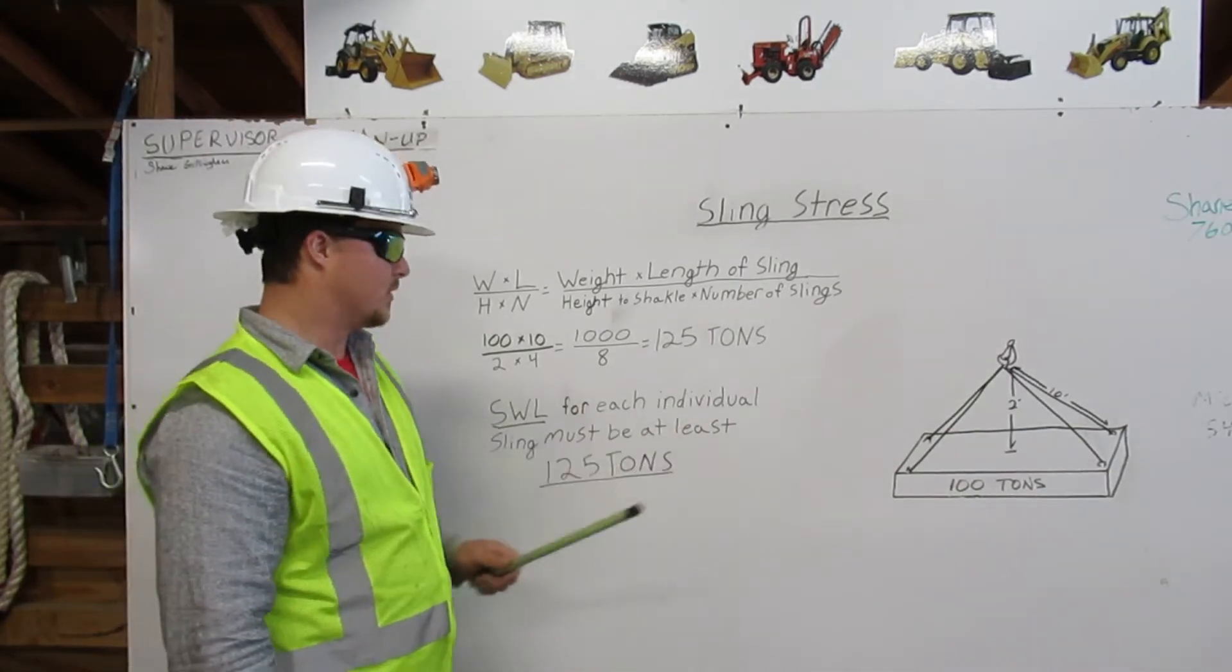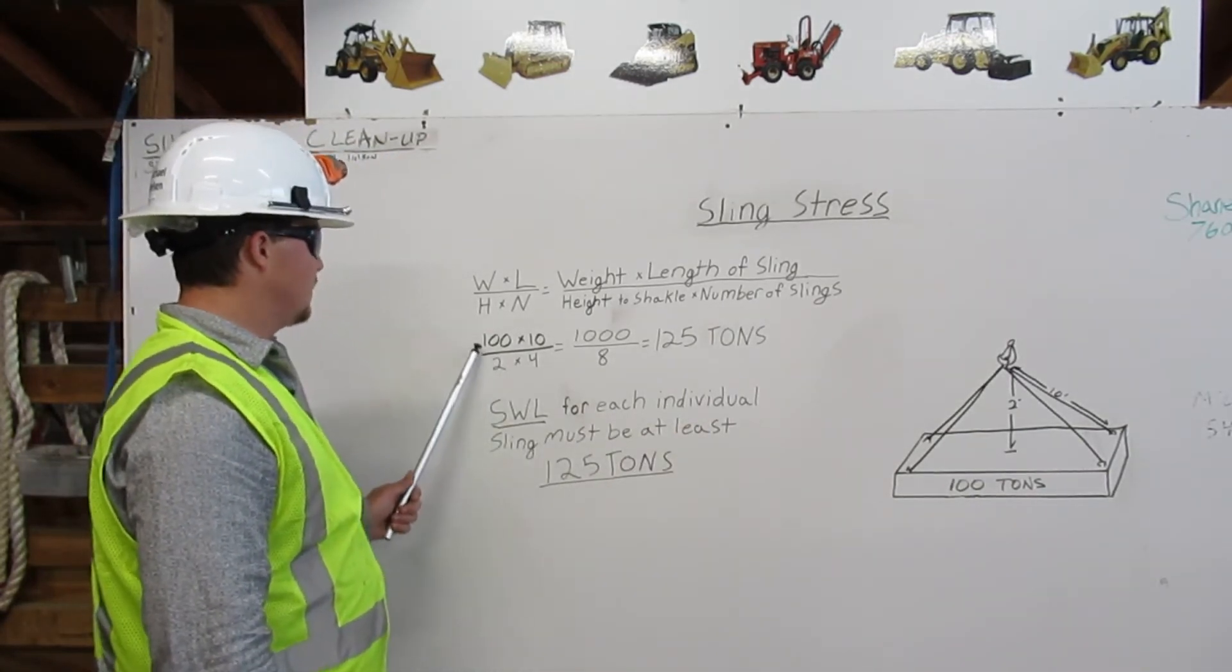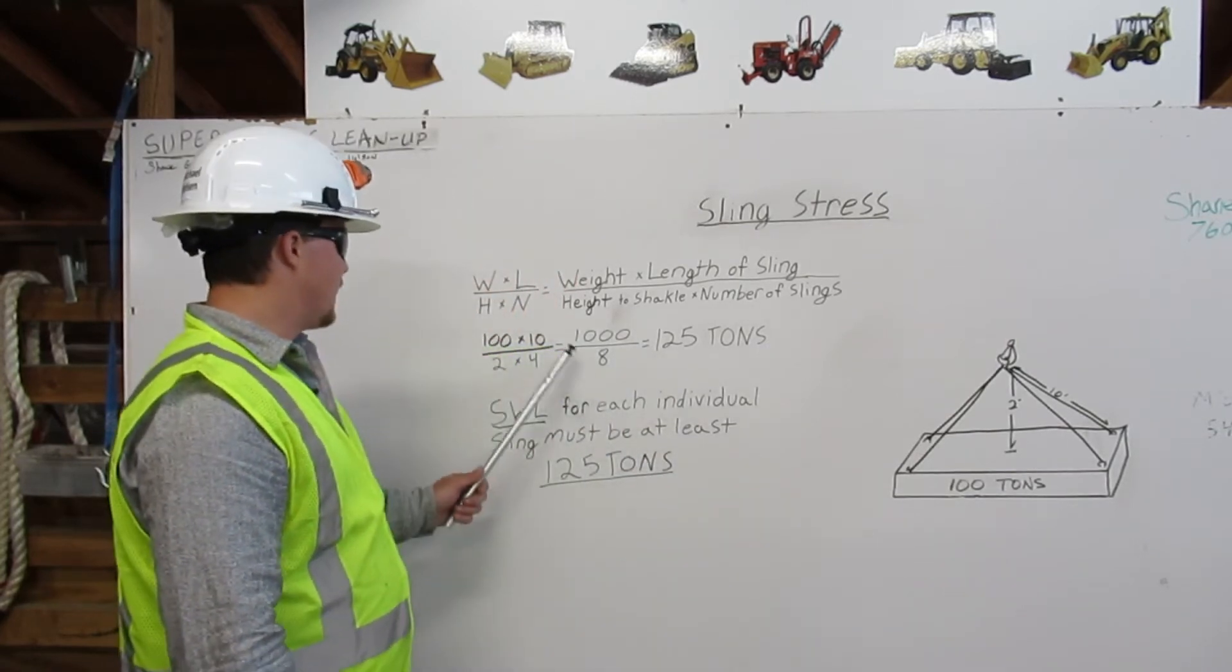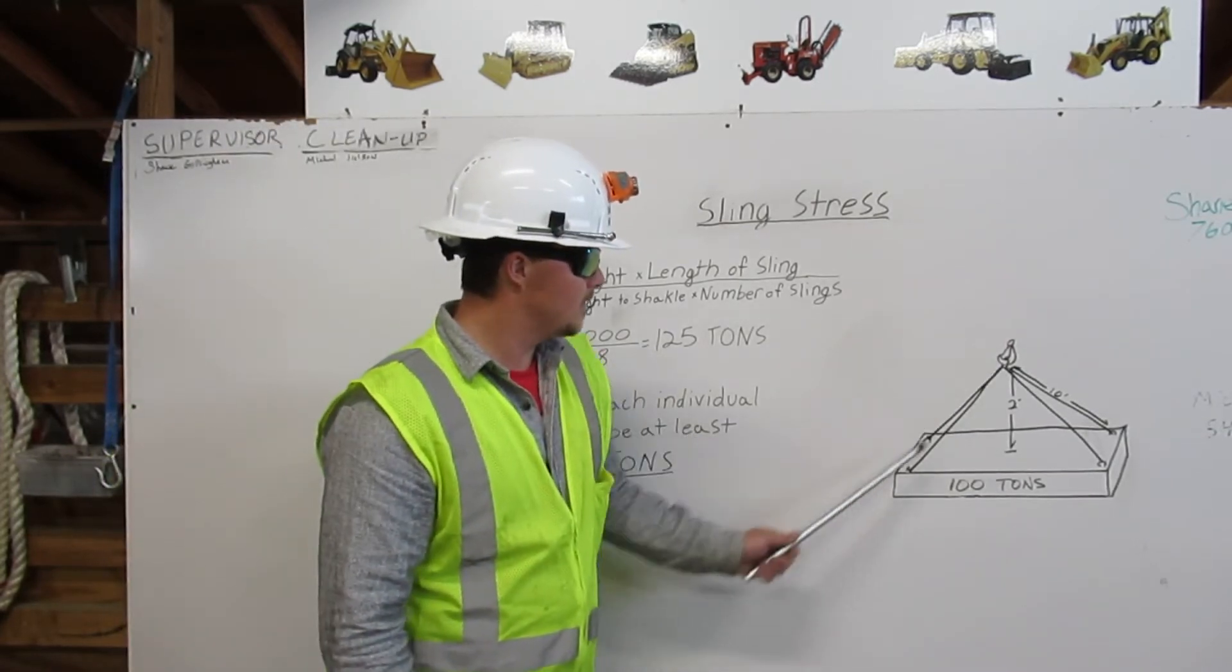So here we are going to input the data. Weight: 100 tons. The length of each sling is 10 feet.